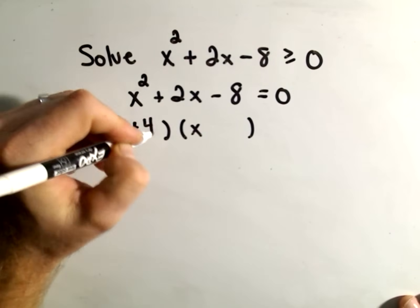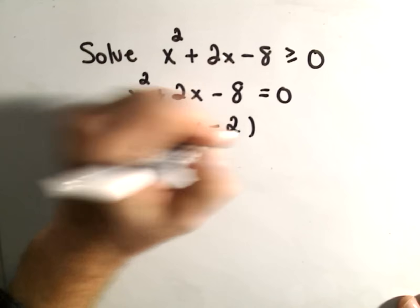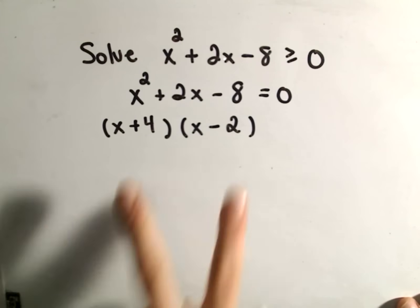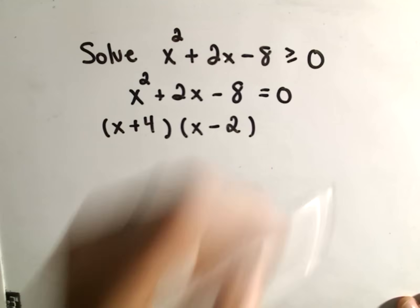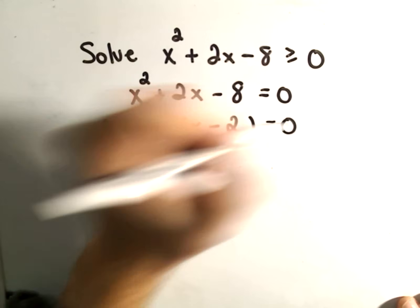I think positive 4 and negative 2 would do that for us. So we'll get negative 8, and then we'll get our positive 2 in the middle, equals 0.